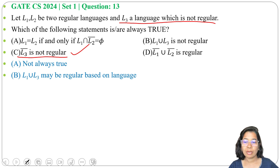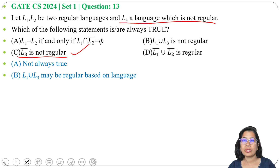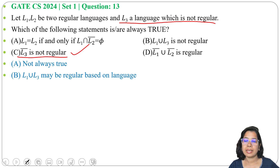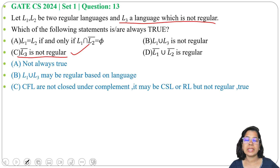Regular language complement is regular, but L3 is not regular, so its complement is also not regular. If L3 is a context-free language, then its complement could be recursively enumerable or context-sensitive, but not regular. So Option C is true.